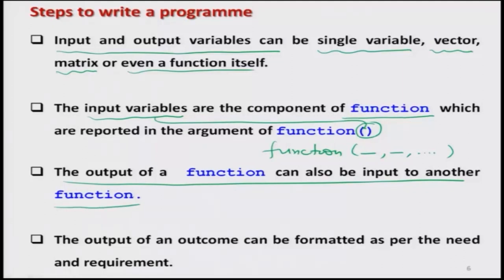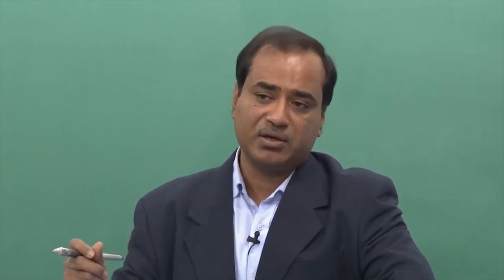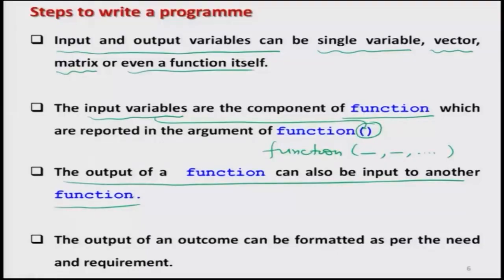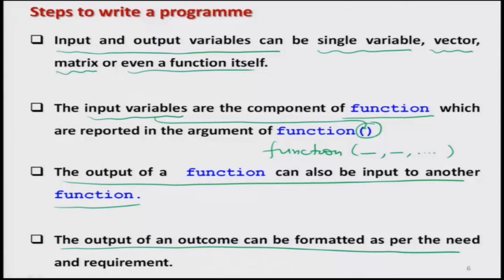This is one of the strong features of R — whenever we are trying to write a very lengthy program, we can divide it into smaller components. Each component will be a sort of function, give some outcome, and those outcomes can be combined together in a particular function. Also, in R, the output can be formatted as per the need and requirement using commands like sprint, cat, and so on.